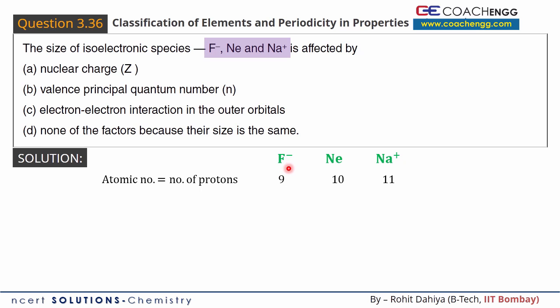Fluorine atom gains one electron, so in F minus ion total number of electrons are 10. Neon has protons and electrons both equal to 10, and sodium after losing 1 electron attains 2,8 configuration with 10 electrons.